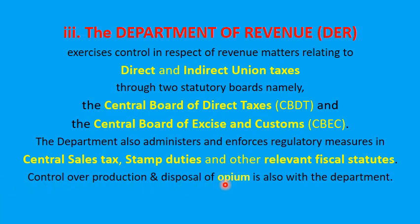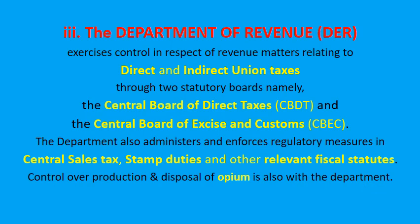Control over production and disposal of opium is also with the department, and this is an important statement. The Indian Stamp Act 1899 speaks of tax levied in the form of stamps on instruments regarding transactions. Under Article 246, stamp duties on documents specified in Entry 91 of the Union list in Schedule 7 of the Constitution — namely bills of exchange, cheques, promissory notes, bills of lading, letters of credit, policies of insurance, transfer of shares, debentures, proxies, and receipts — are levied by the Union.